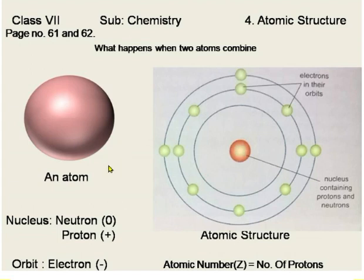We discussed in the previous video the atomic theory of John Dalton, according to which an atom is the smallest particle of any element and is indivisible. But later, scientists like Ernest Rutherford and J.J. Thomson found that atoms are made of smaller particles called subatomic particles — electrons, protons, and neutrons.